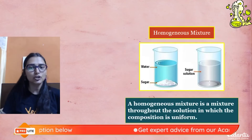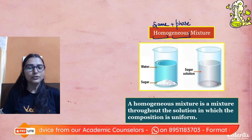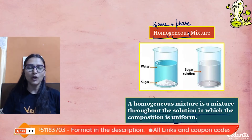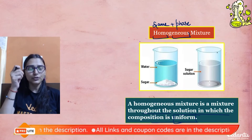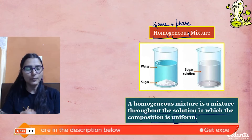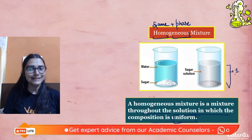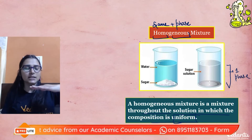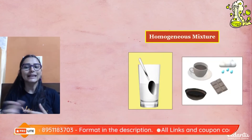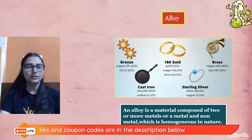Homogeneous mixtures — 'homo' means same, 'geneous' means phase — are mixtures with a uniform composition throughout. For example, if you add a small amount of sugar into water and mix it well, the particles are uniformly distributed and the composition is the same at every point. There is only a single phase. Examples include tea and lemonade.